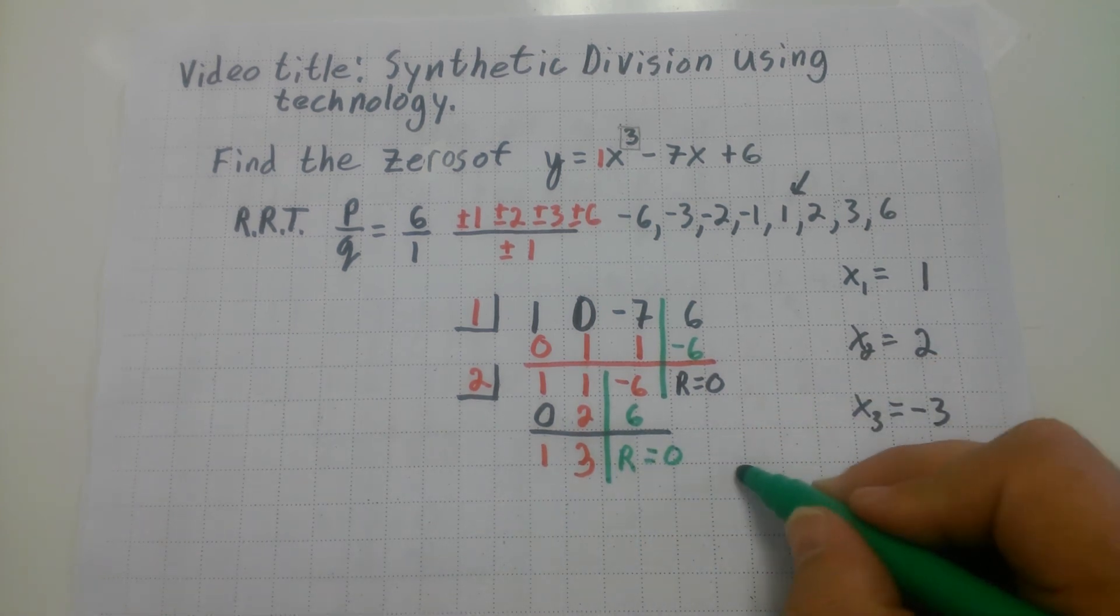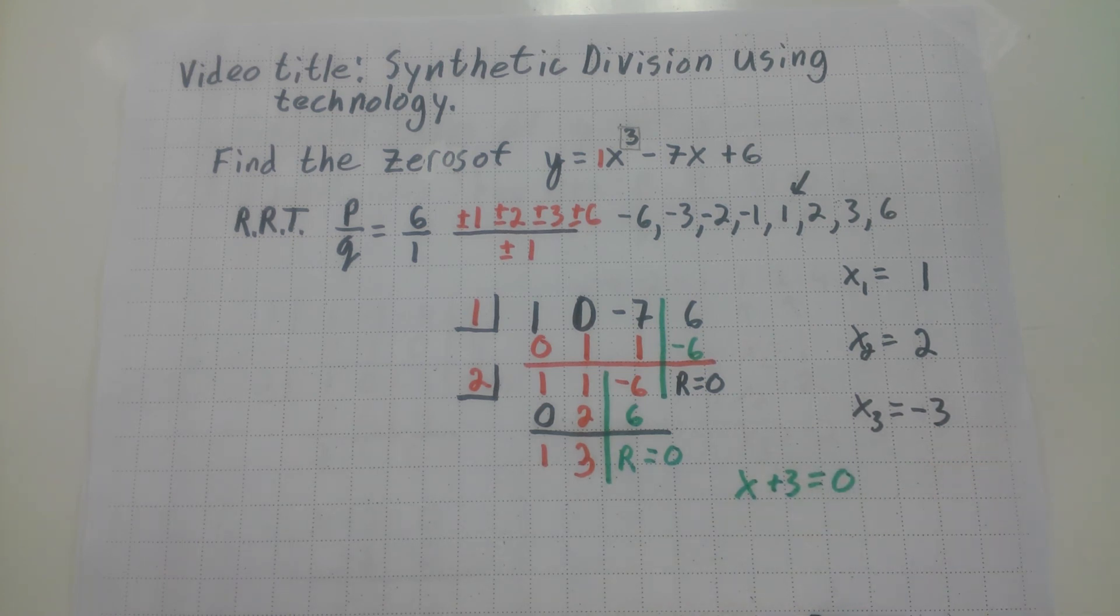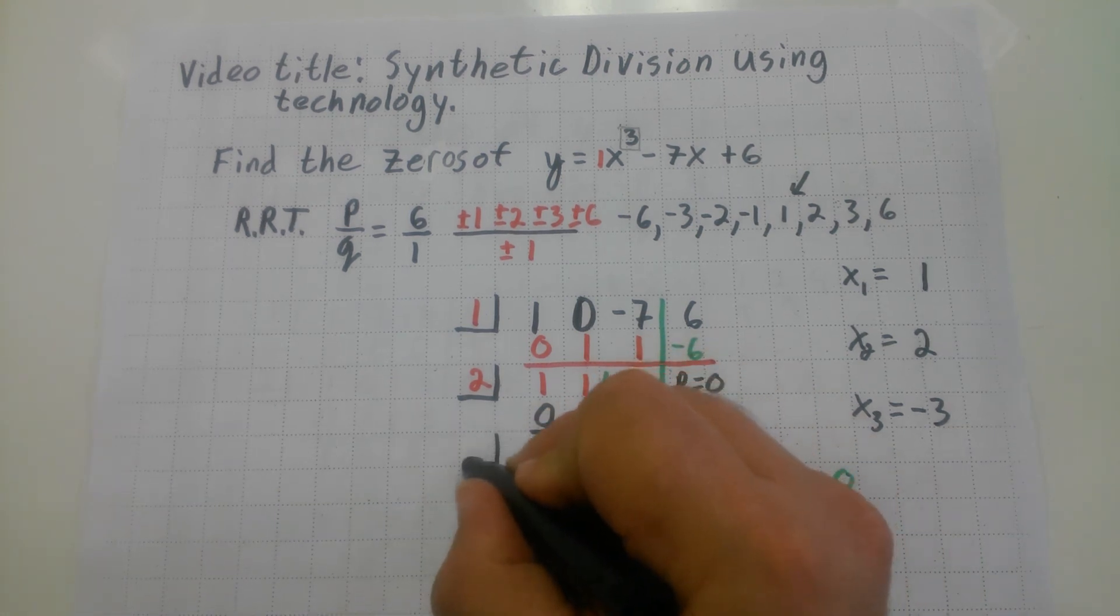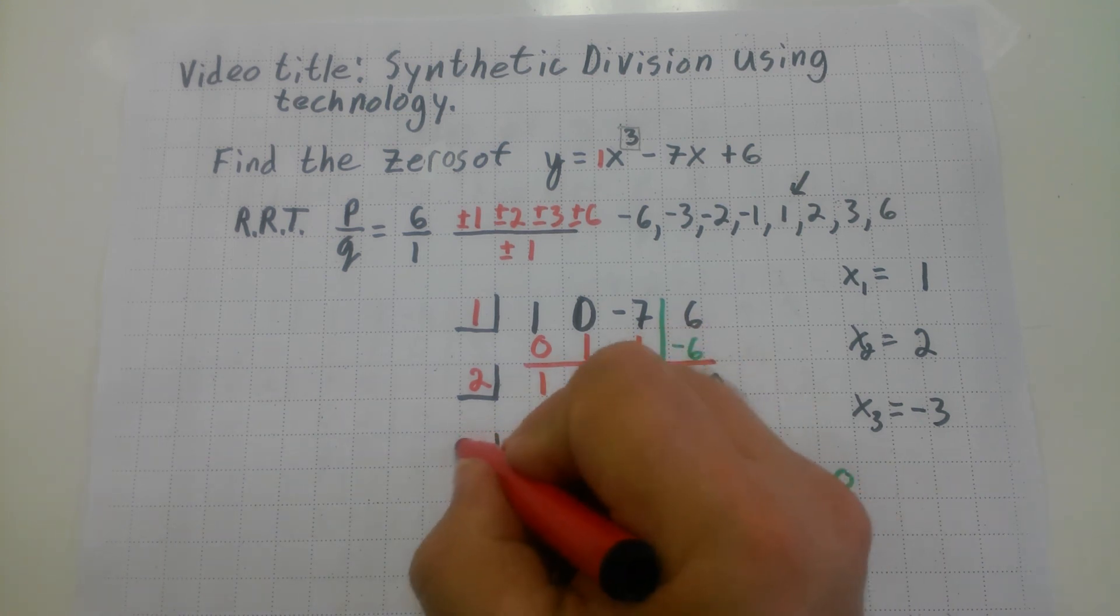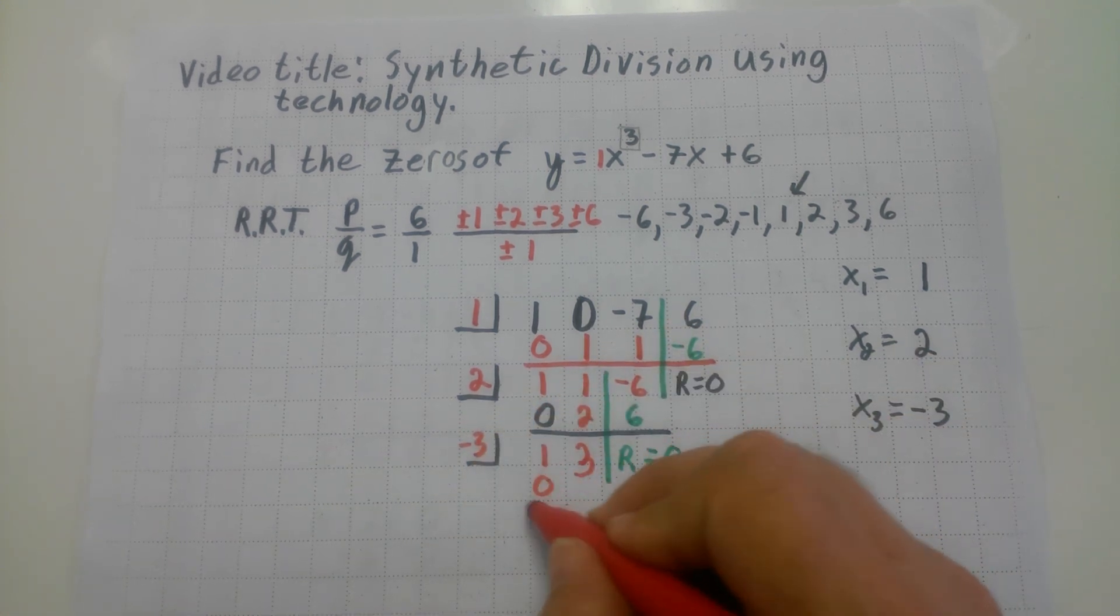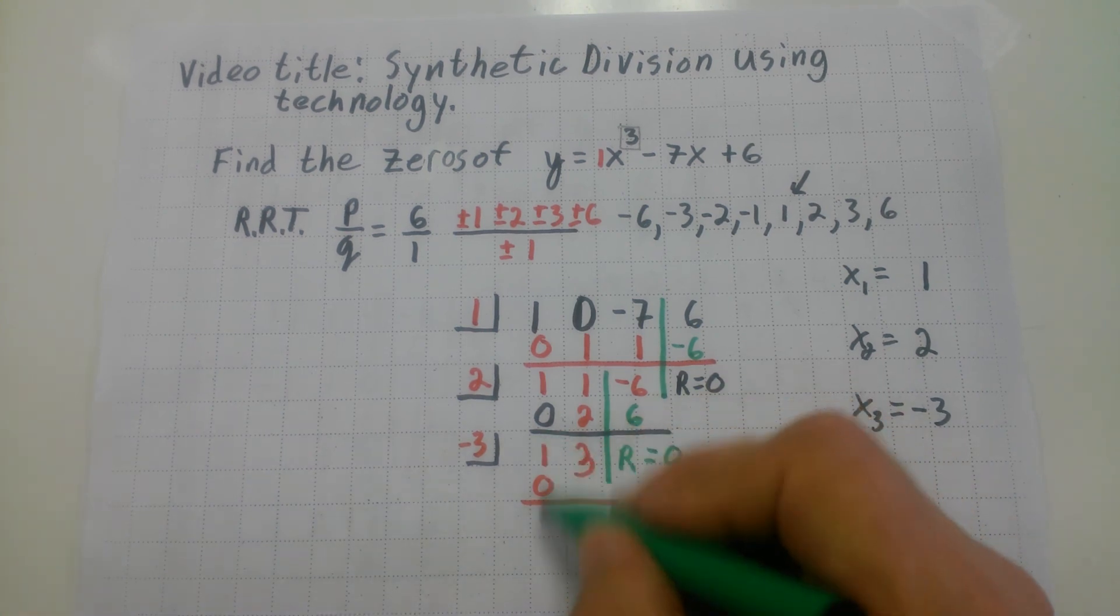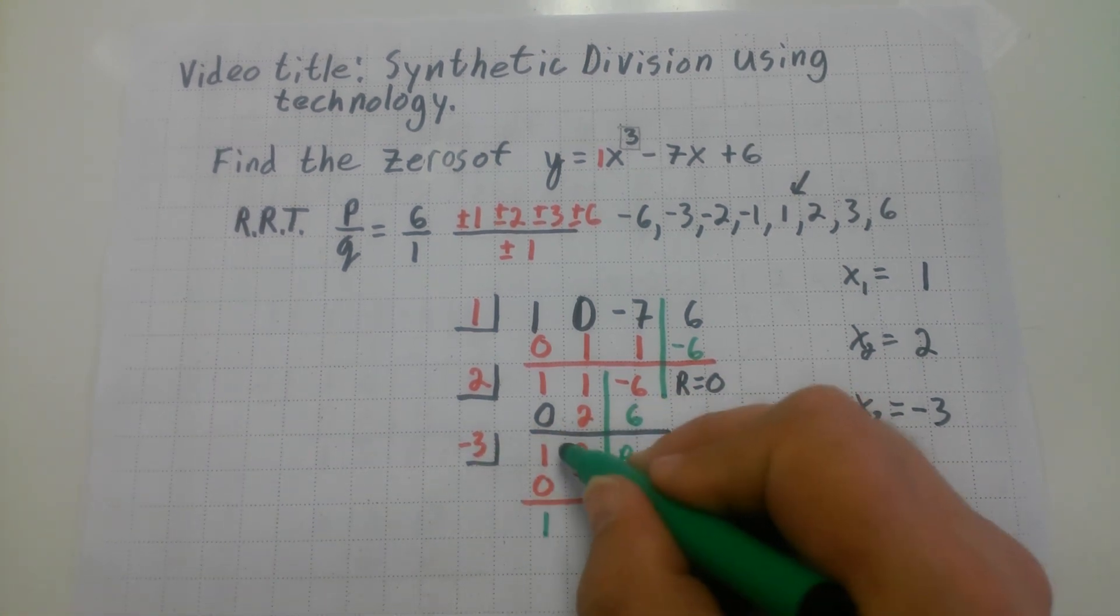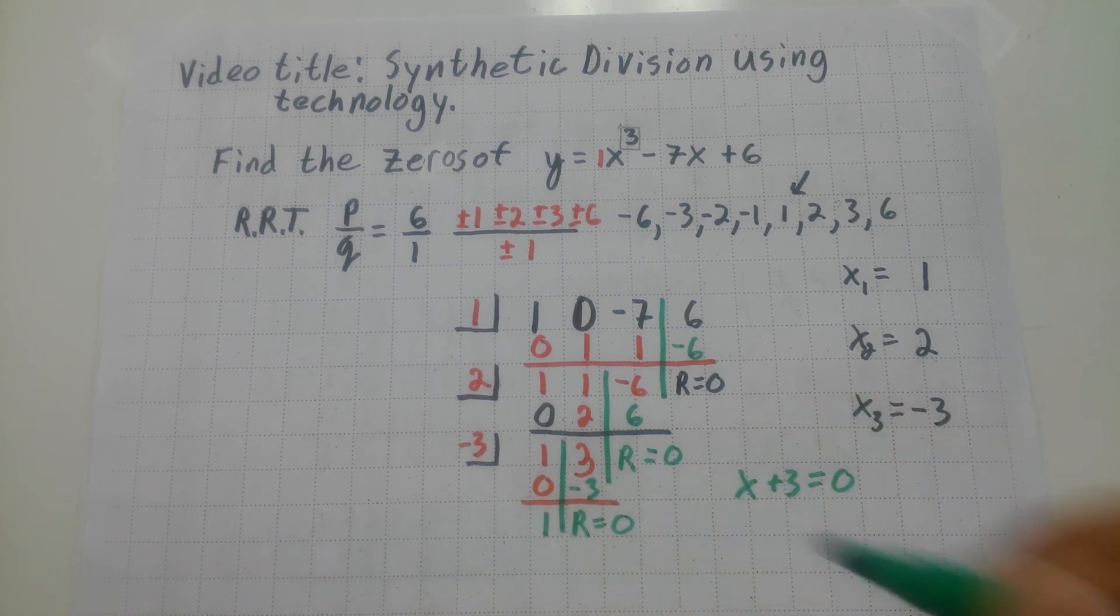Now, I can say that this is going to be x plus three equals zero and then solve it. Or, I can continue using synthetic division and throw a negative three in that little place. So, here we go. I'm going to put a zero there. What's one plus zero? Well, one plus zero is one. What's negative three times one? Negative three. Again, I get a remainder of zero.